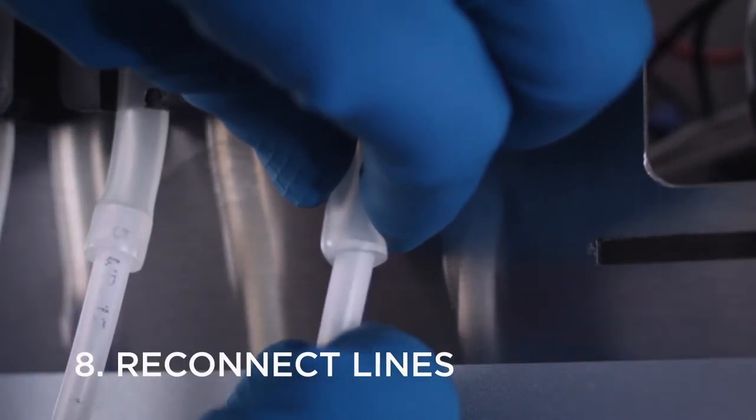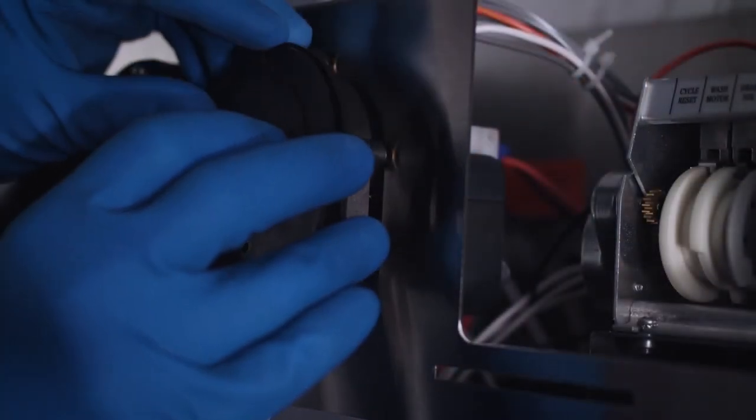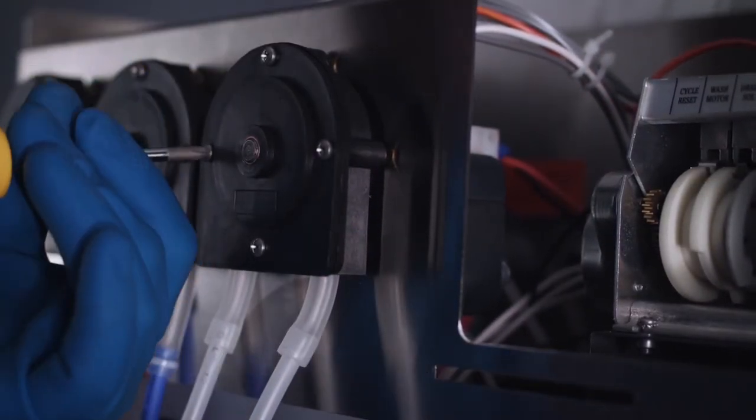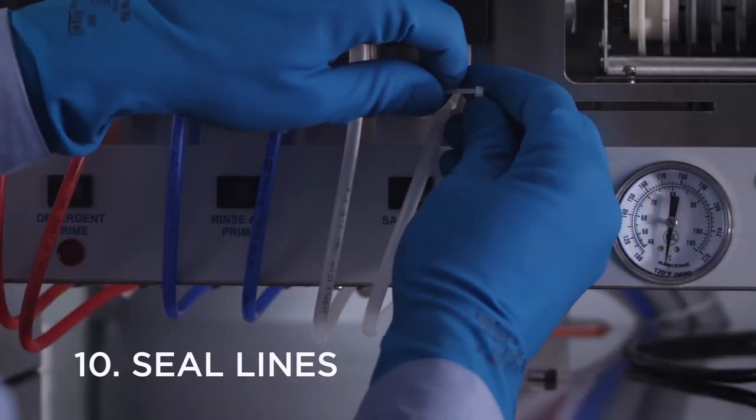You can now reconnect the incoming and outgoing chemical lines. Replace the faceplate and secure with four screws. Then, use zip ties to seal both chemical lines.